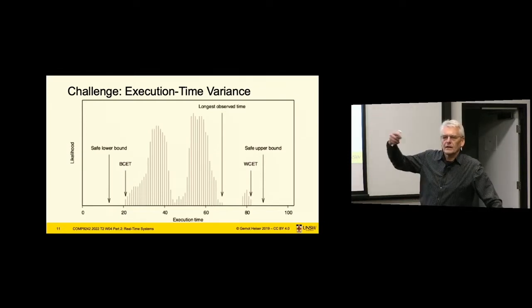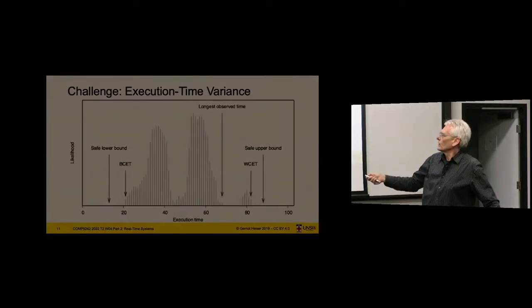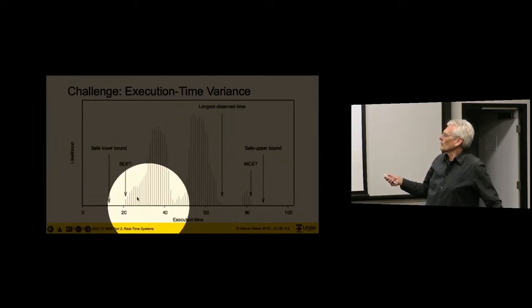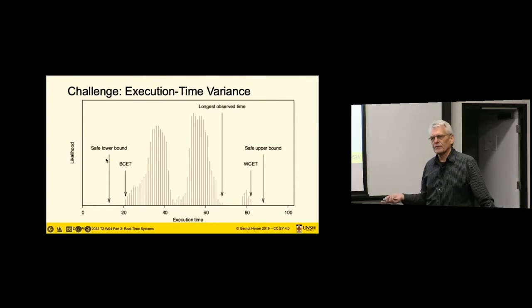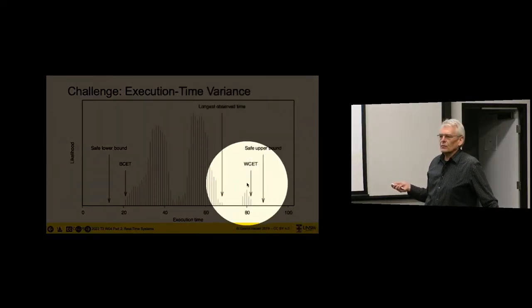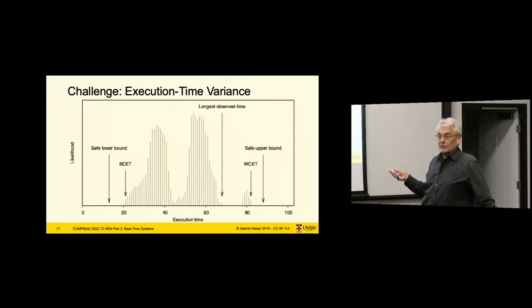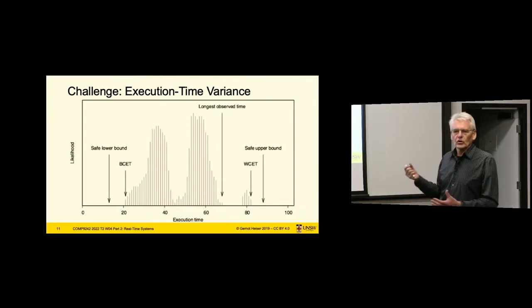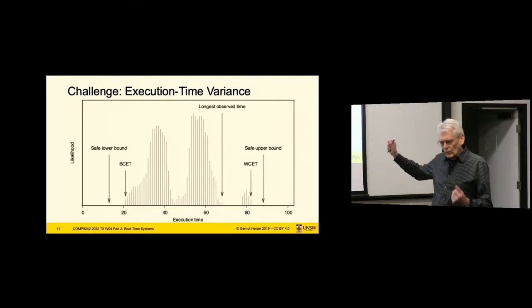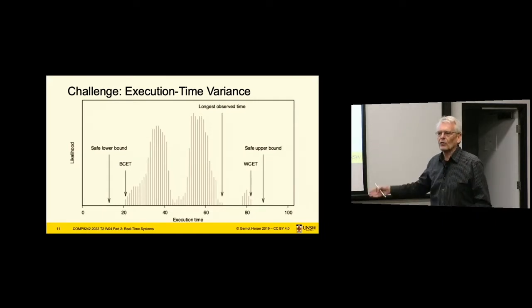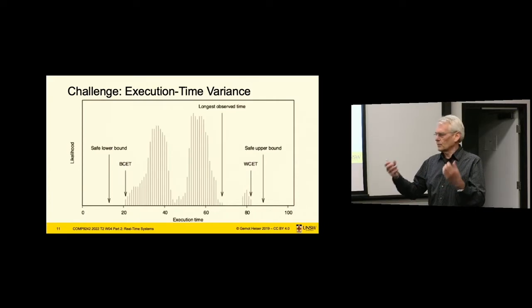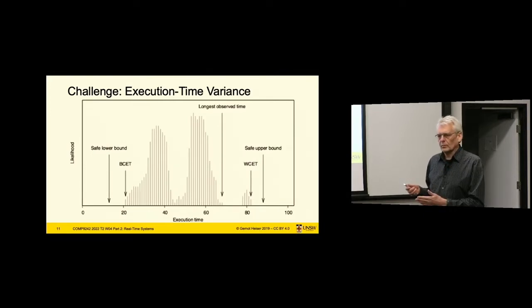In a non-real-time system, what you care about is the average execution time. Whereas in a real-time system where you have to deliver by a deadline, it's the worst case that counts — really the maximum of this latency distribution. In general, you don't know what the worst case is. There's a lot of work on techniques for establishing an approximation of the worst case. In most cases it's impossible to determine the worst case because there's not enough determinism in your underlying machine. You have to get away with approximations, and these approximations are meant to be sound — meaning you're on the conservative side. Then you get a worst-case execution time safe upper bound.